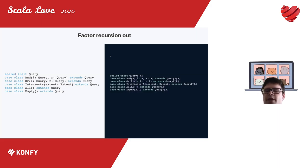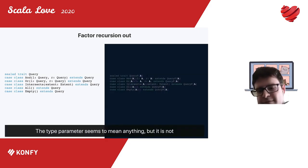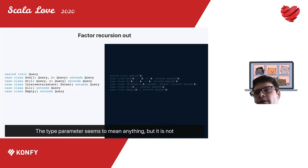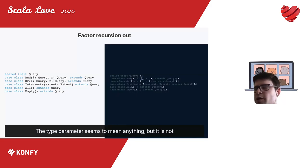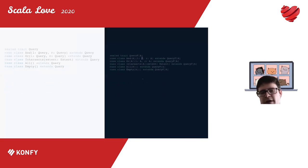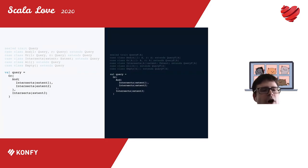There's more than one way to traverse a structure — not a single eval function. Because we need to factor recursion out, we start by introducing a type parameter to our DSL. By introducing this type parameter, we're telling the compiler that our nodes are no longer explicitly recursive — this type parameter can mean anything. We don't have explicit self-references anymore.